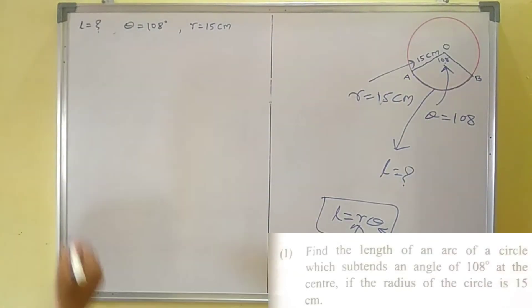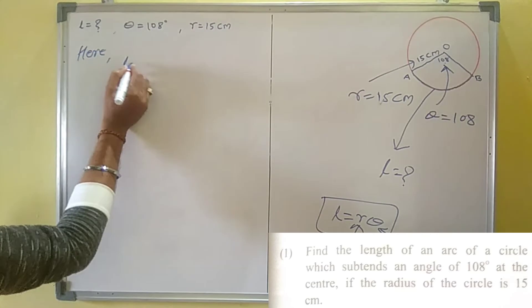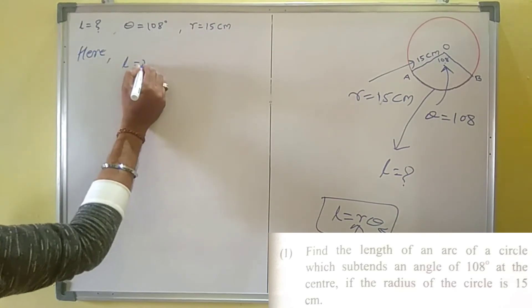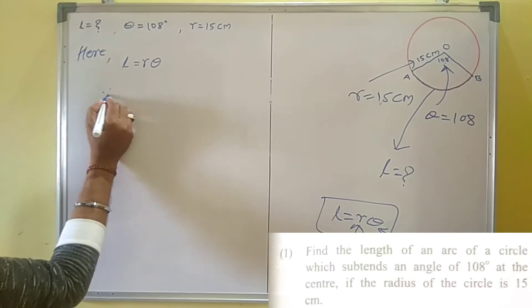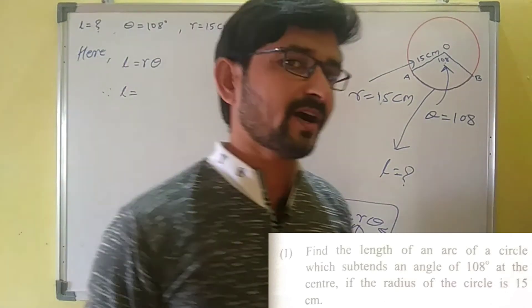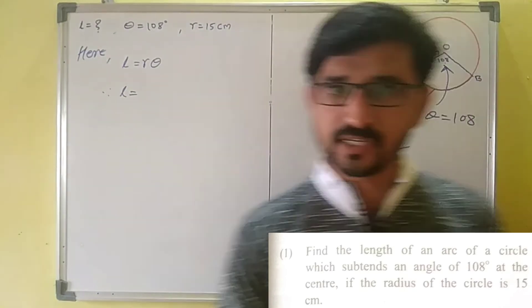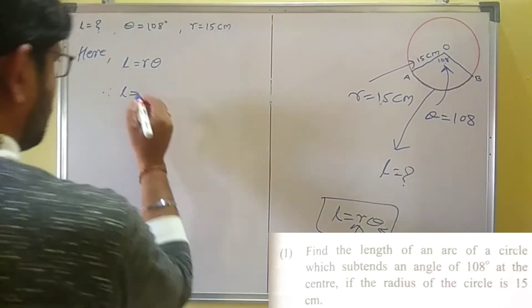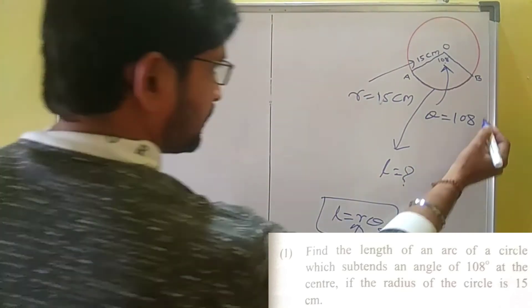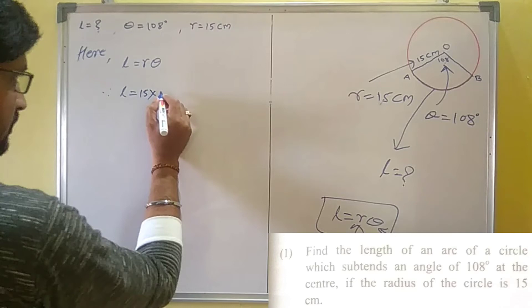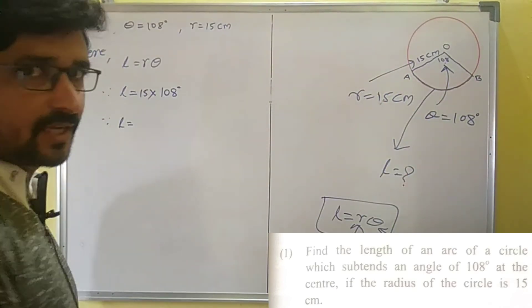So let's see. Here we know that length of arc, that is L, is equal to R theta. R is the radius of circle and theta is the central angle. Therefore L is equal to the value of R, which is 15 centimeters, into theta. Theta is equal to how many degrees? 108 degrees. So 15 into 108 degrees.